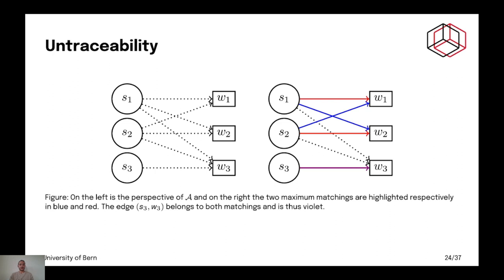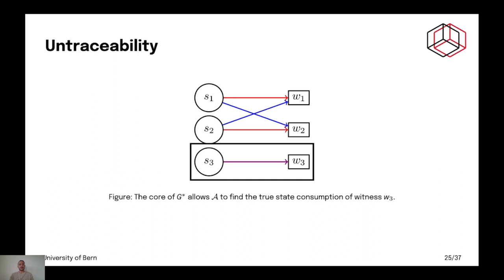So, let's come back to our example. Our example has the core that is colored here. So, you have two maximum matchings. First one is in red, second one is in blue. The edge in violet means that it belongs to both maximum matchings. So, the observing edges, the dotted arrows, are not part of the core. Meaning that the adversary can trim the observing edges and completely de-anonymize the third transaction and compromise untraceability entirely.